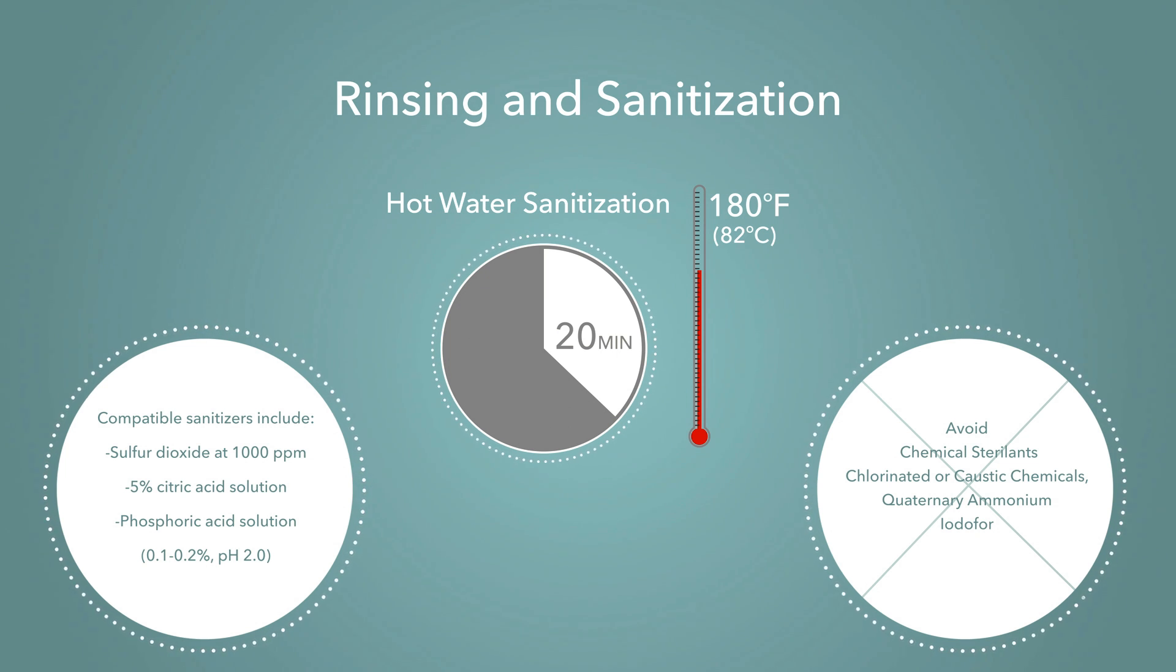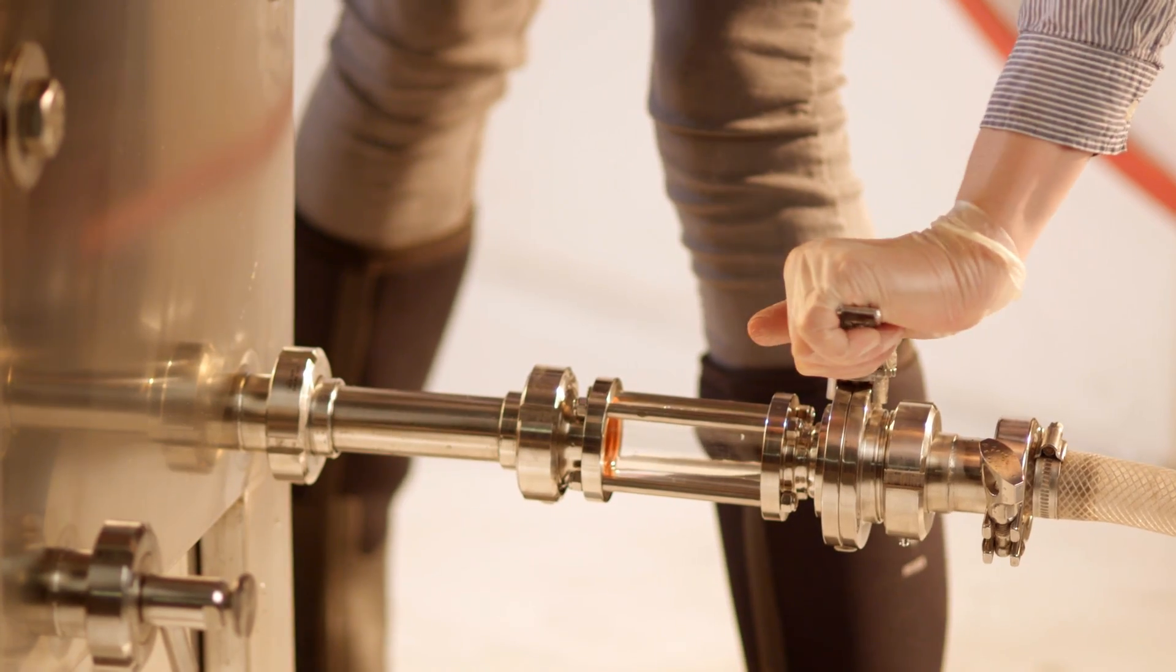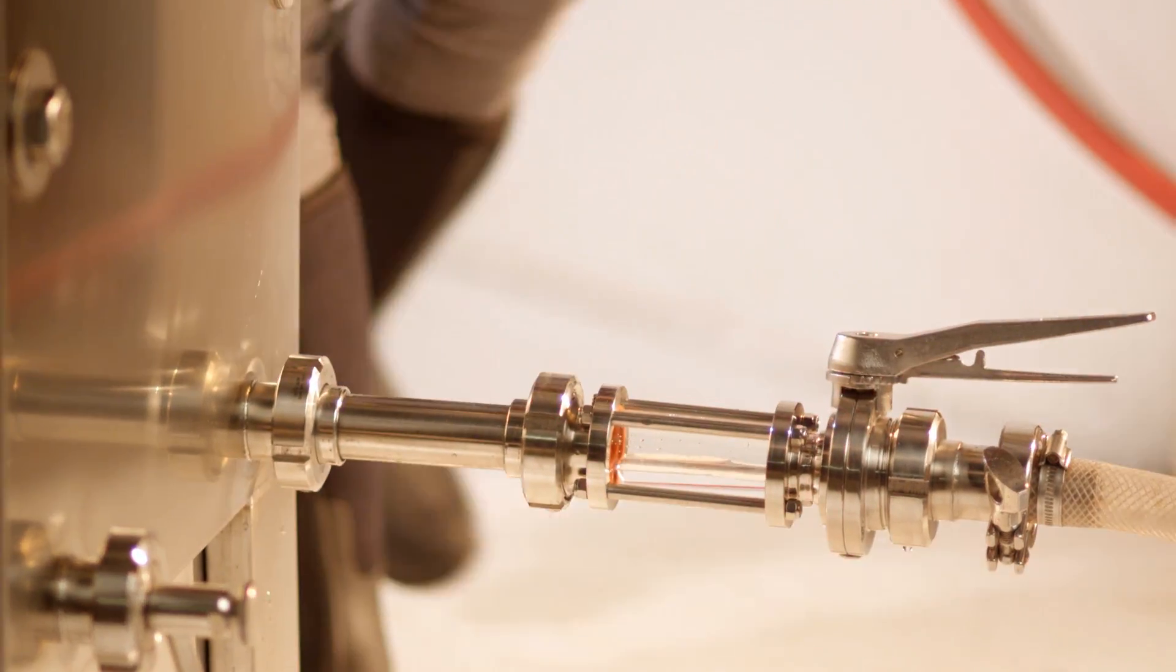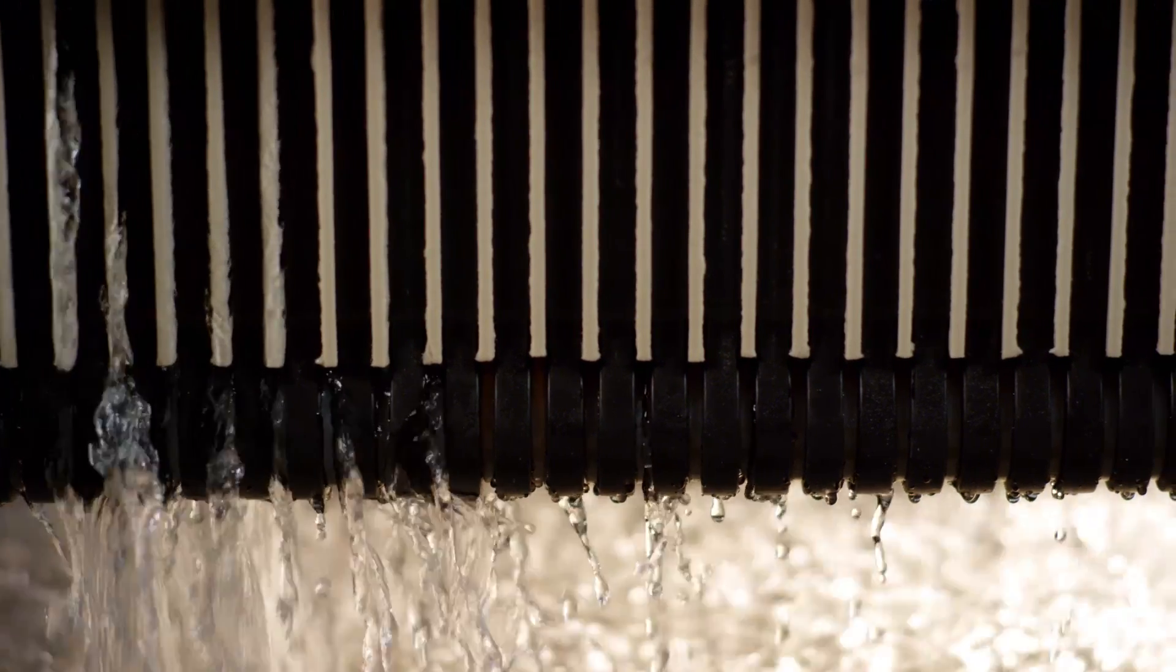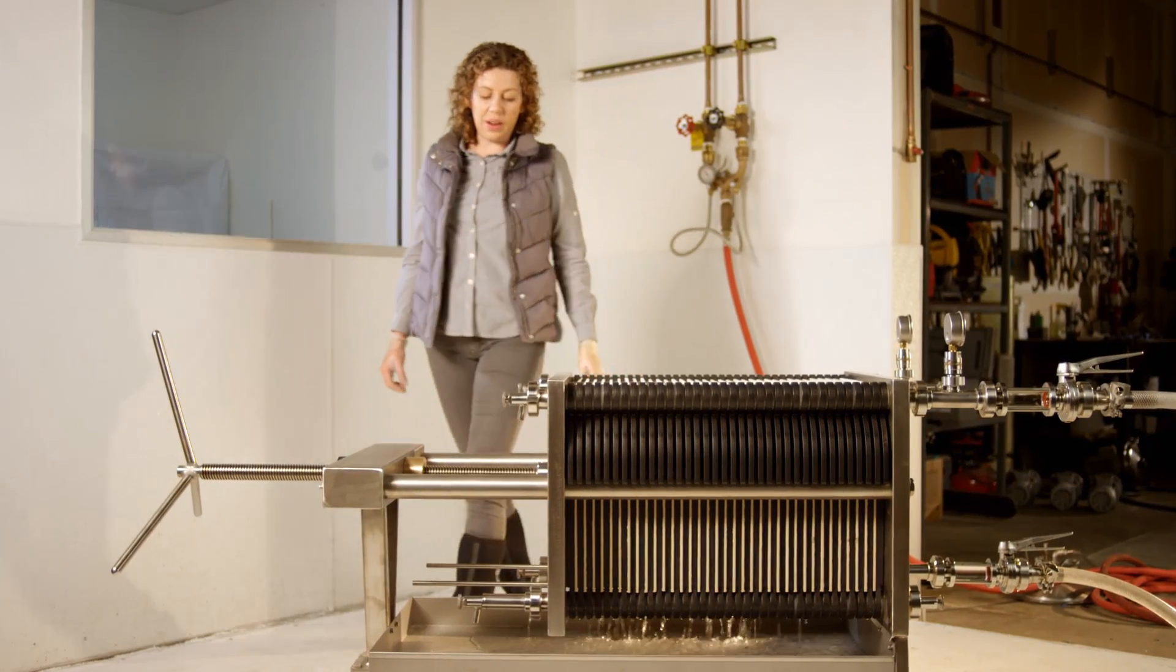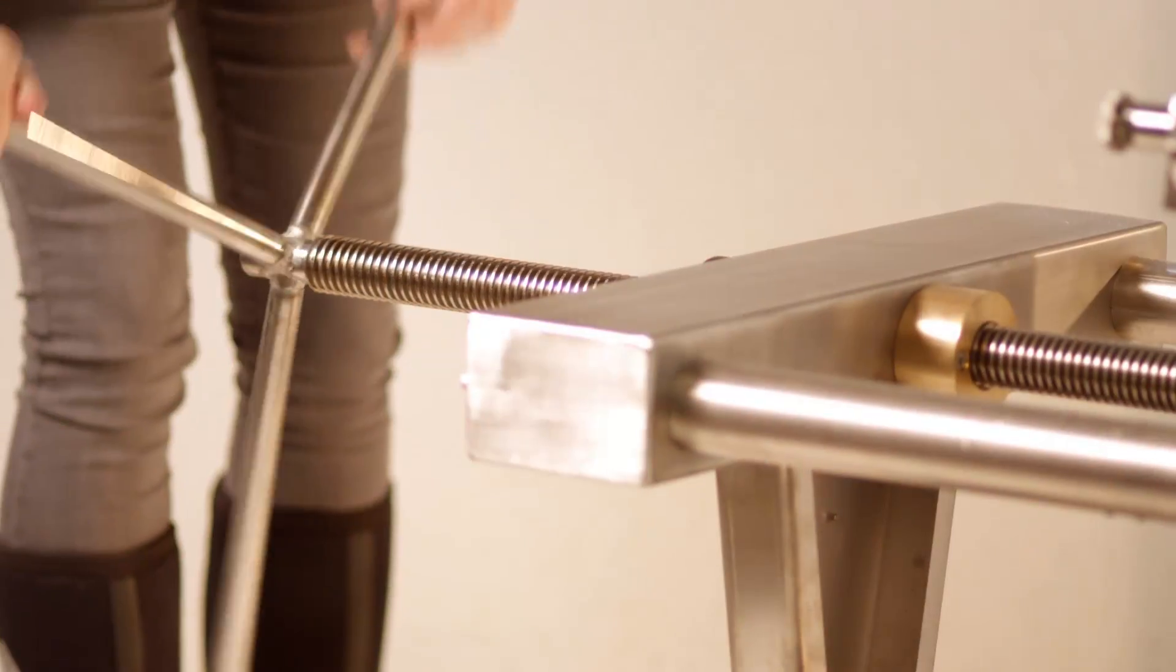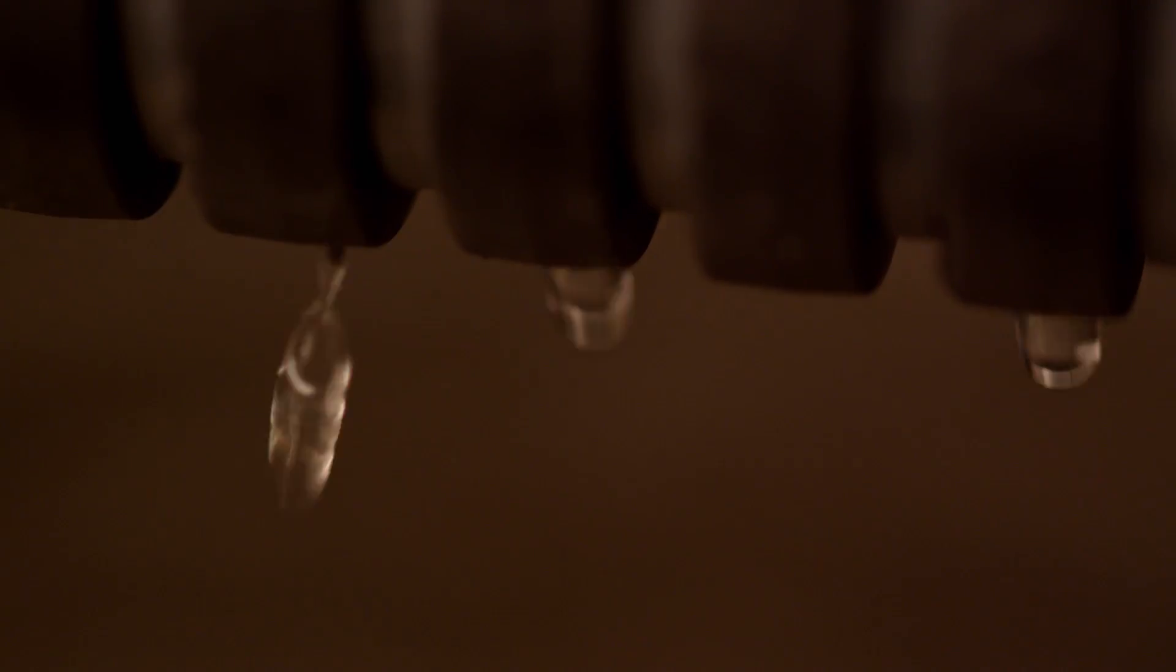When initiating rinsing and sanitization, begin a flow of ambient water into the inlet and out of the outlet. The filter at this point should be loosely closed with valves open and drains flowing. Visually confirm leaking and flow across filter. As wetting of the filter pads occurs, slowly tighten filter until dripping is significantly reduced, though still present.